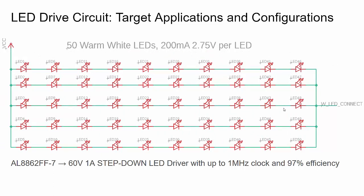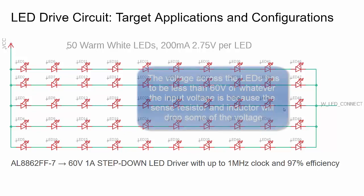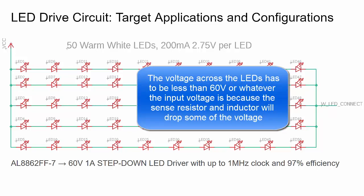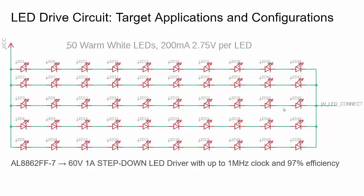Here's a schematic showing a combination of LEDs in series and parallel — 50 different LEDs total, using warm white LEDs. These LEDs take a maximum current of 200 milliamps and drop about 2.75 volts. The AL8862 can handle up to 60 volts input and a maximum output of 1 amp of current. Remember: current is common in series and voltage is common in parallel, with voltage dropped across each device in the series path. With five LEDs in parallel, you can add their currents to reach 1 amp.